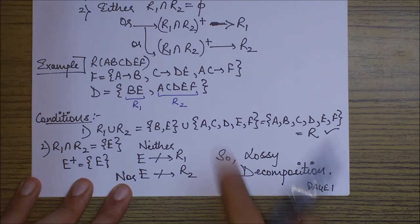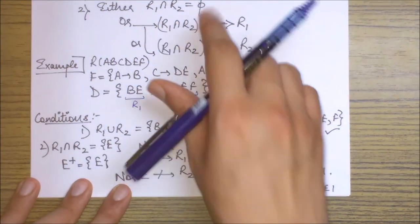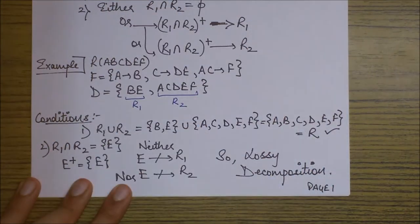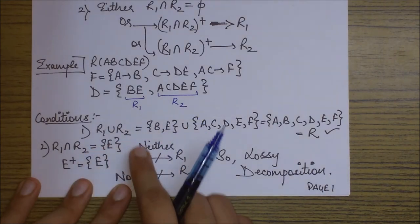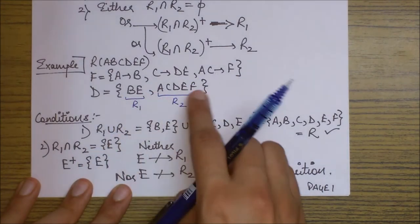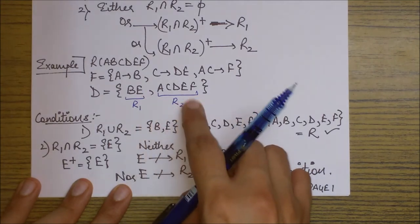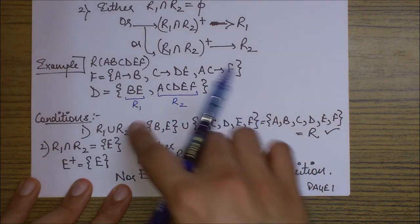Next condition was either this R1 intersection R2 should be equal to phi. Let's see what is the intersection. Intersection is not phi. R1 intersection R2 is E. As you can see that E attribute is common between both. So it is not phi.